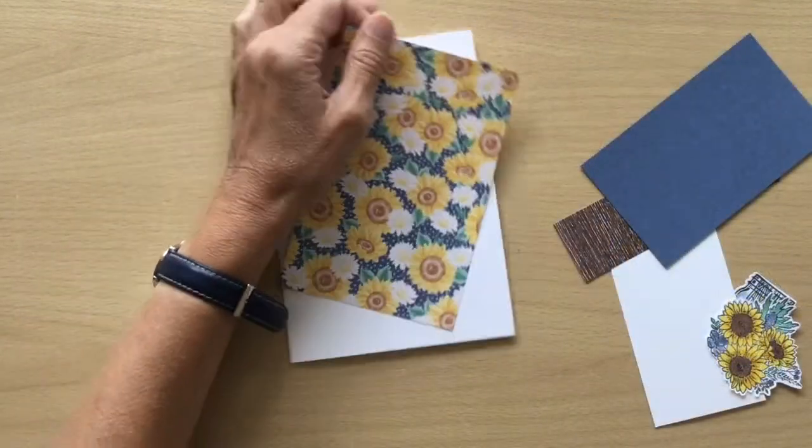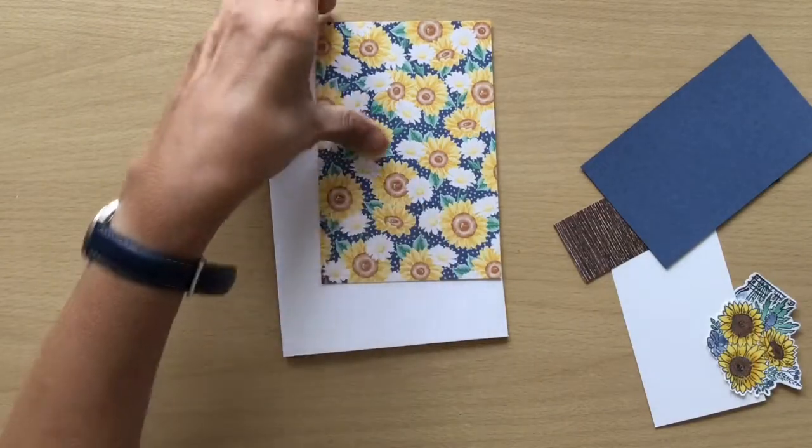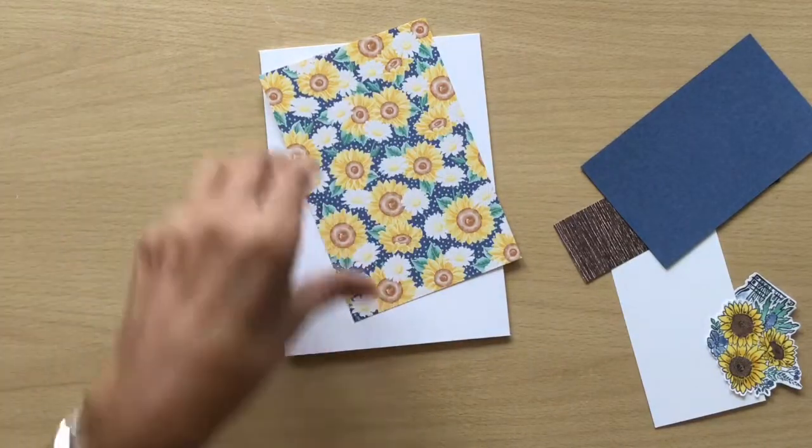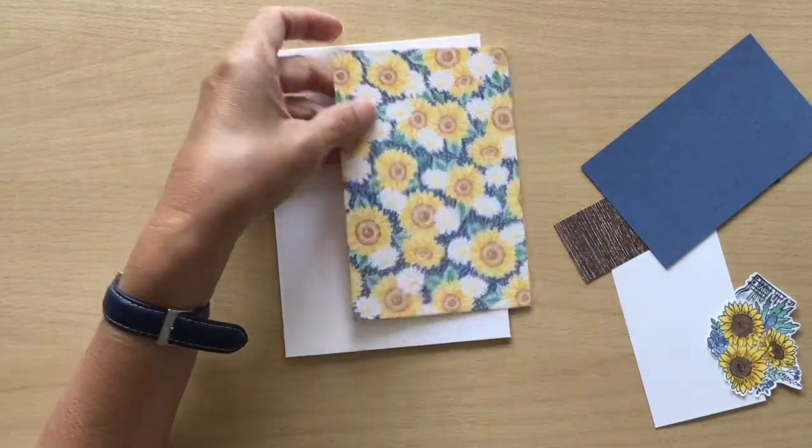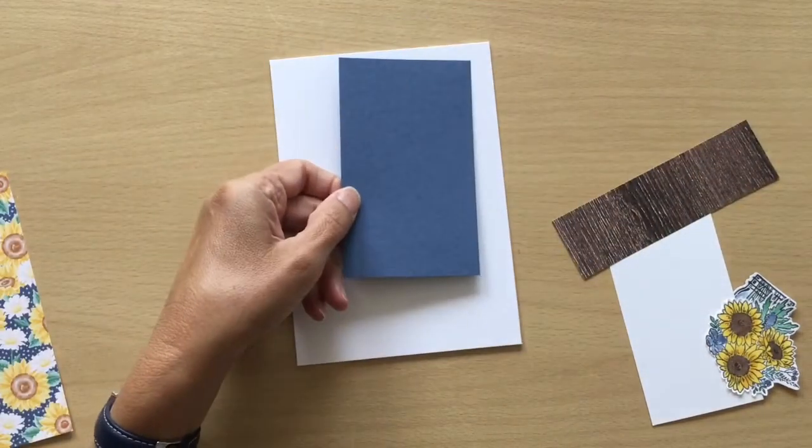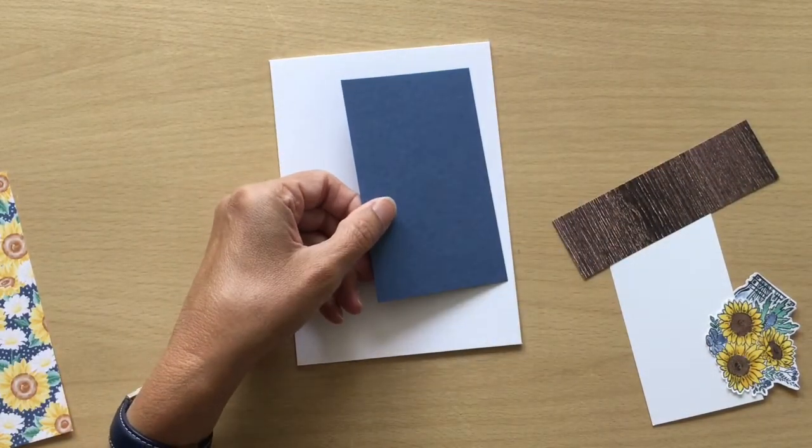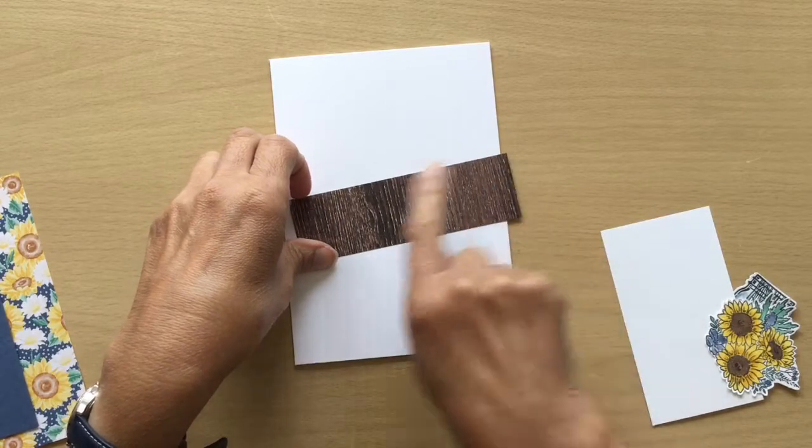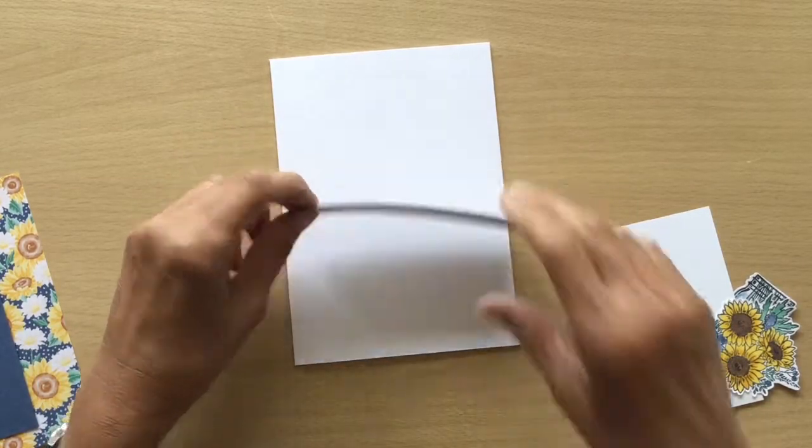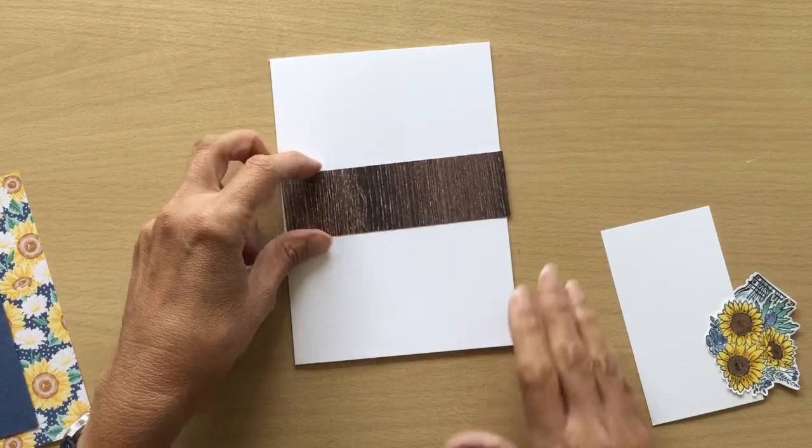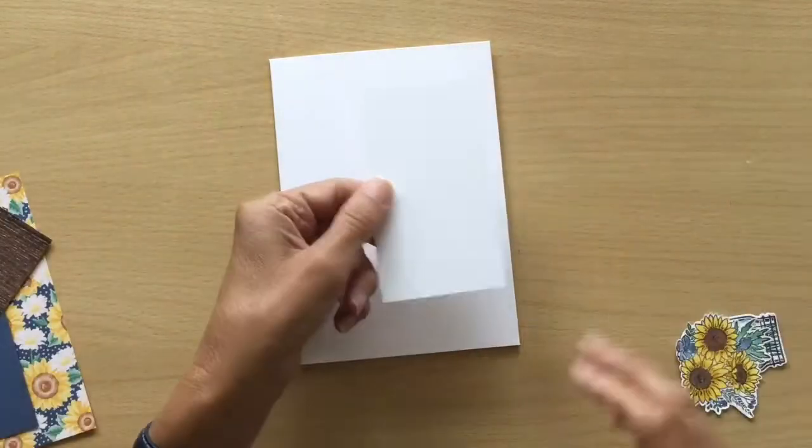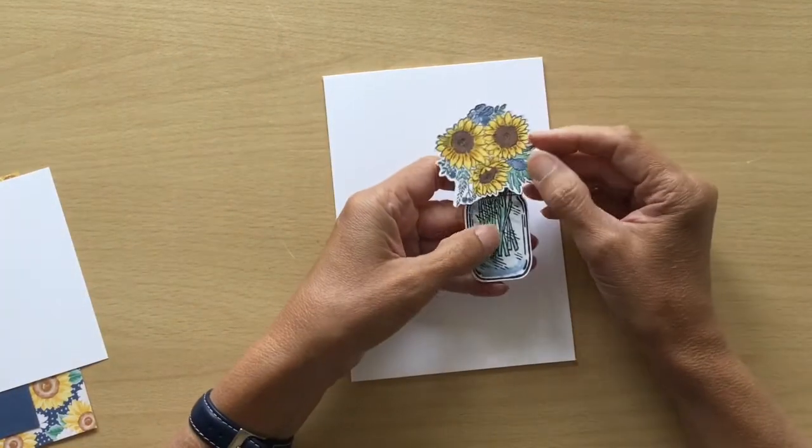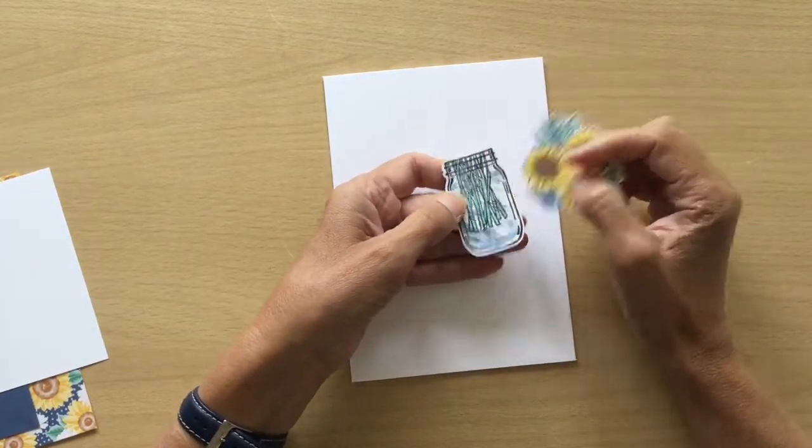My second layer I've used the flowers for every season designer series paper. I'm going to be using this side, you can choose whatever paper you want for this. And this is four by six inches. My third layer I'm just using the misty moonlight and that is three by five. And then I have my strip that's going to go across, now this is from the in good taste designer series paper and this is one and a half by five inches. And then I have some whisper white which is four and a half by two and a half, and I've also gone ahead and stamped and punched my jar.